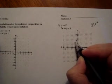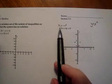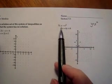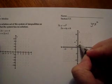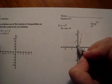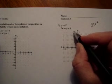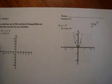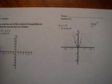Before I connect the dots, I look back at the original inequality. It has a strict greater than sign, so this should be a dashed curve. That means the points on the curve are not actually included.